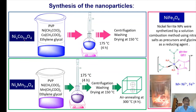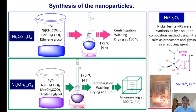Here are the procedures we used to prepare these nanostructures. In the case of nickel cobalt oxides and nickel manganese oxide, we used solvothermal methods using ethylene glycol as solvent, acetate precursors of the metals, and PVP as a size-controlling agent. This mixture was transferred to a round-bottom flask and heated at 170°C for 4 hours. After reaction, we collected the material by centrifugation, washing, and drying at 150°C. For nickel manganite, after drying, we calcined them at 300°C for 4 hours.